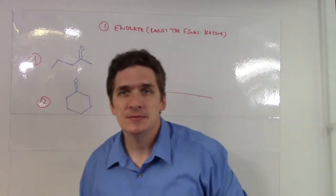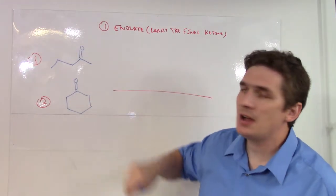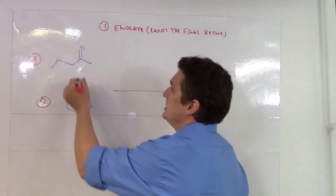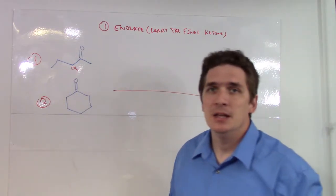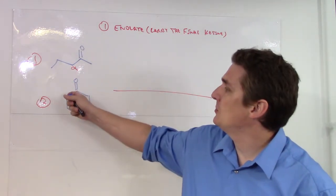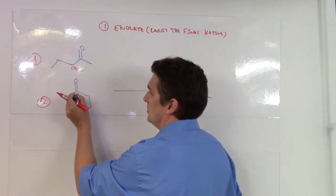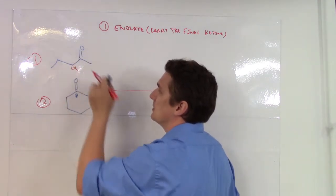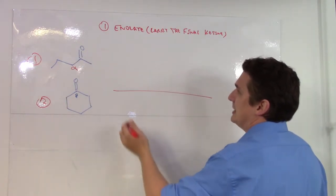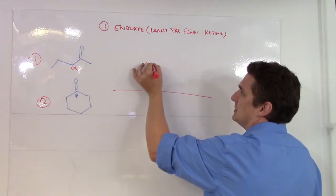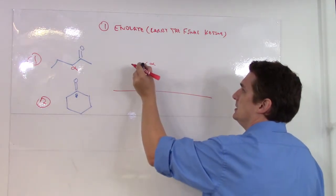So what we need to identify on our starting compound that's going to form the enol is the alpha carbon. This alpha carbon here is going to form a bond with the ketone in the next complex. So it's going to form what we're going to call the beta carbon relative to our final ketone. So let's draw that bond between the alpha and the beta.